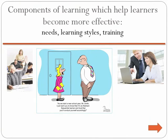Smith suggests that there are three interrelated components to learning how to learn that are useful to help learners become more effective: needs, learning styles, and training.